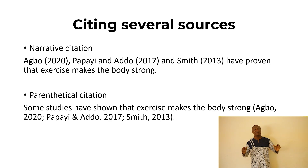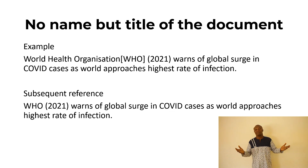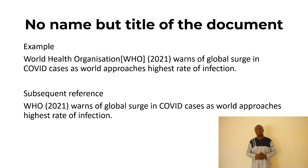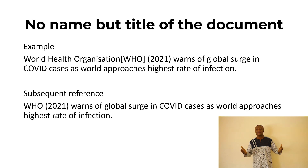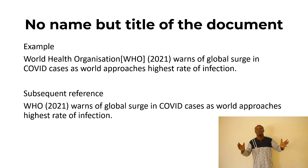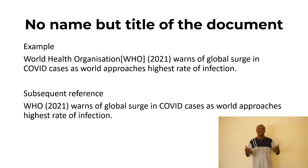Sometimes the books or documents that we use do not have any author's name — for example, the Constitution of Ghana or WHO documents. In this case, you cite the name of the organization. So we have: World Health Organization, 2021, 'words of global surge in COVID cases as world approaches highest rate of infection.' In subsequent citations, you can just use the abbreviation WHO, because the full name has come earlier — so WHO, 2021, with the same title.